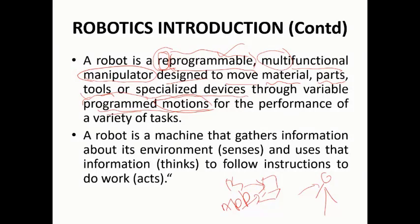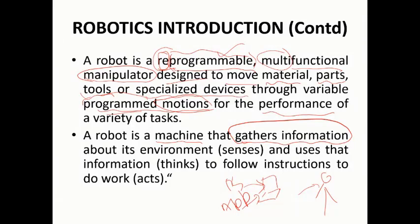Through variable programmed motion, we need both the software and the mechanical component together. You can think of a robot as a good combination of hardware and software — just like computers. The machine and the software together create a complete machine. When you insert a program or code, it will work for you. The robot is a machine that gathers information about its environment.